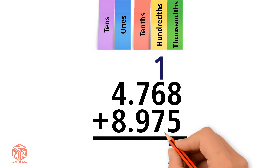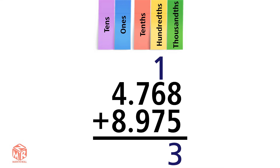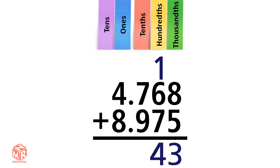Now we add the hundredths. 1 plus 6 plus 7 equals 14. 14 is greater than 9, so we have to regroup again. We're left with a 4 in the hundredths column and an extra tenth in the tenths column.